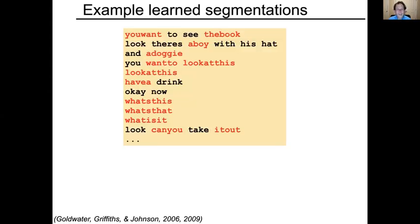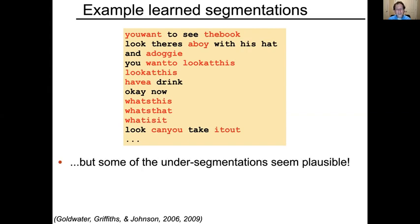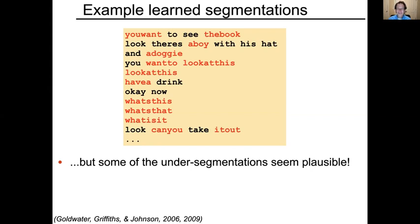Looking at qualitative results — example word segmentations from a corpus with this model — it clearly under-segments, but some of the under-segmentations seem quite plausible. For example, it's plausible that a child might not yet recognize that 'can you' is two separate words, since it occurs extremely frequently as a unit. Likewise, 'a doggy,' 'a boy' — it's empirically observed in the child language acquisition literature that young children sometimes think 'a' is a prefix to the following noun. So even though this model doesn't achieve great recall relative to the adult English ground truth, that gap might itself have some explanatory power.